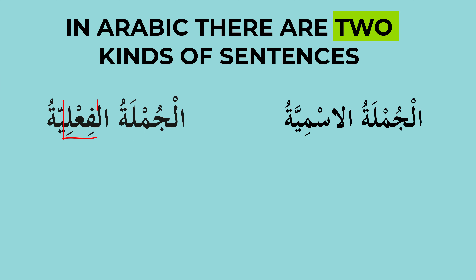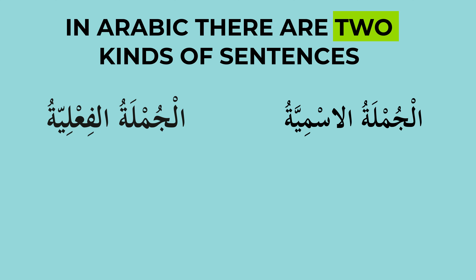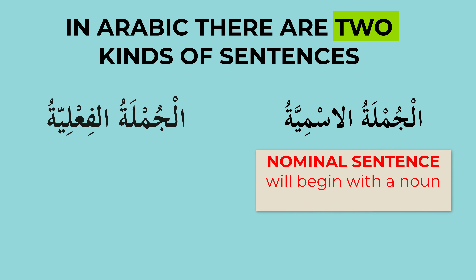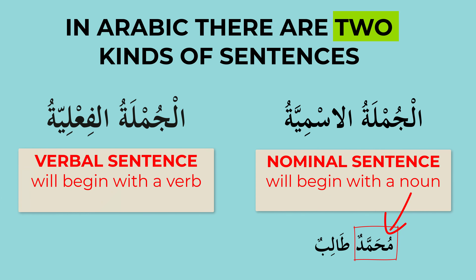Remember, fial means verb. Fialun means verb. Al-jumlatul ismiyatu — what do we call it in English? A nominal sentence, which begins with a noun. And al-jumlatul fialiyatu, in English a verbal sentence, begins with a verb.